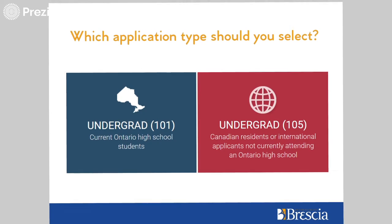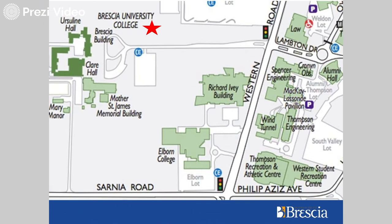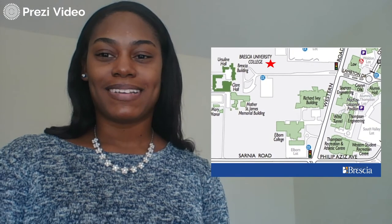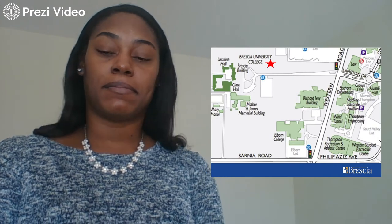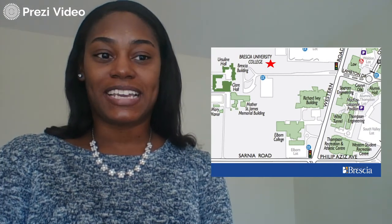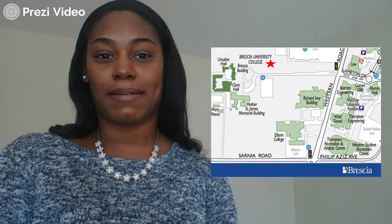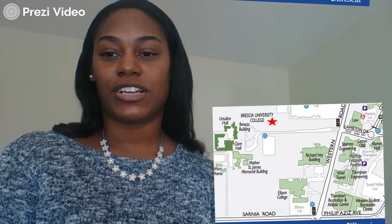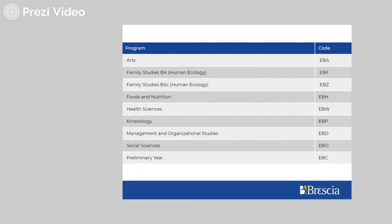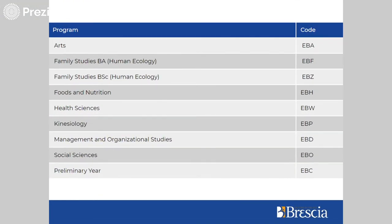Prussia University College is a campus affiliated with Western University. Each campus at Western University has separate admissions practices and different application codes based on their academic programs. When applying to Prussia, you will find us under Western University. Please ensure that you are selecting Prussia as a campus and using our unique program codes to apply.